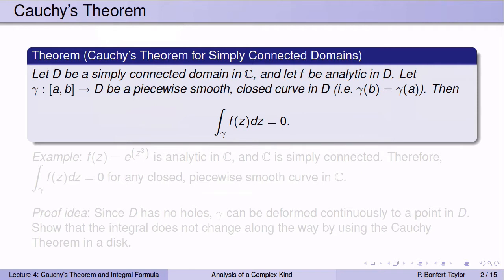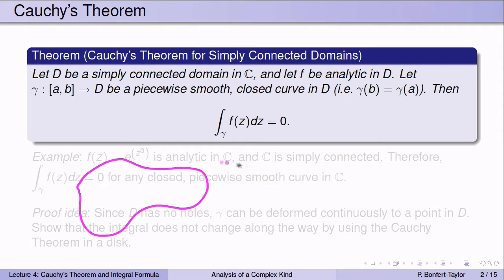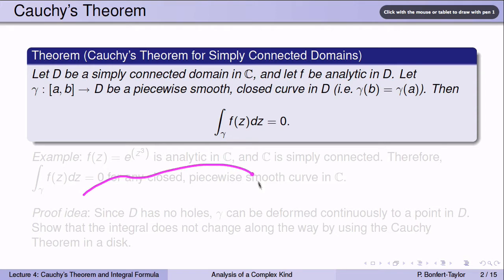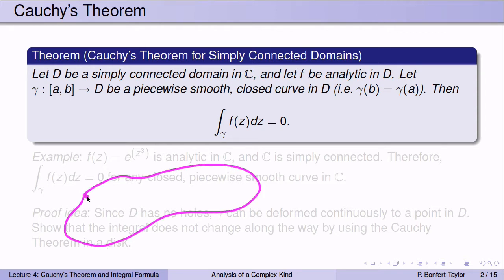Suppose D is a Simply Connected Domain. A domain is an open and connected set — it's in one piece and holes are not allowed. Suppose F is an analytic function defined in D, and let gamma be a piecewise smooth closed curve in D. Here's my Simply Connected Domain D — it doesn't have any holes, and gamma is a closed curve in D.